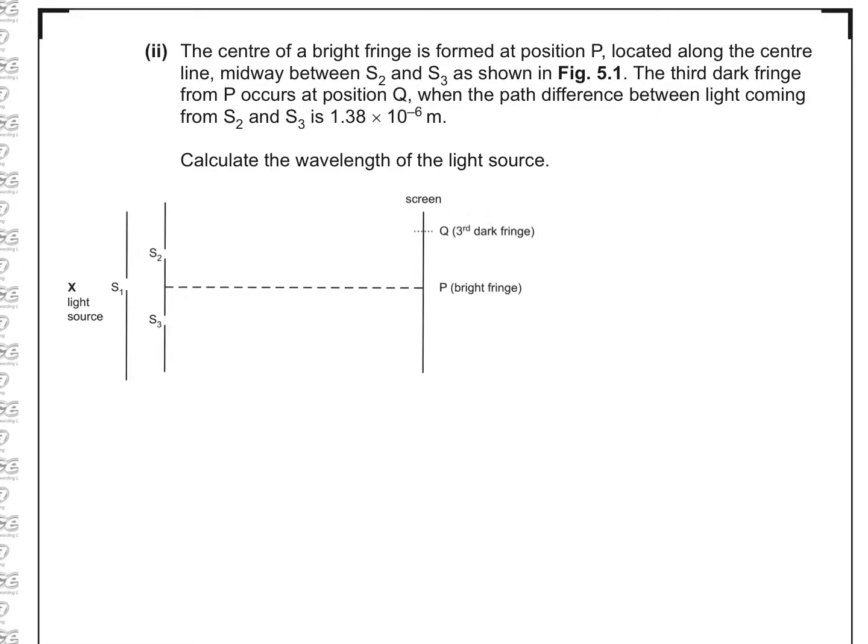So here's that picture again, and it says the bright fringe is here, and it says the third dark fringe is here. So that's the third dark. So there's first dark right next to the bright one here. Second dark will be here. So that's our arrangement. We've got bright fringes here.